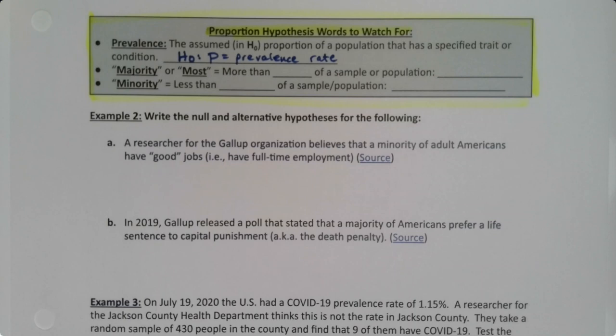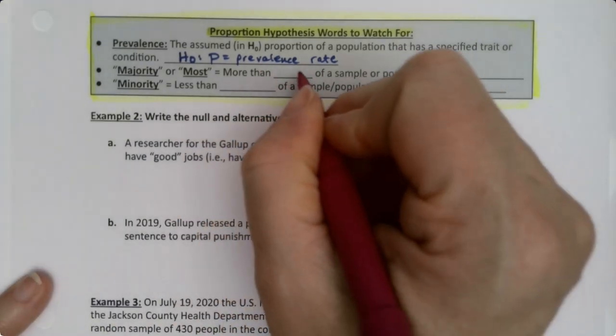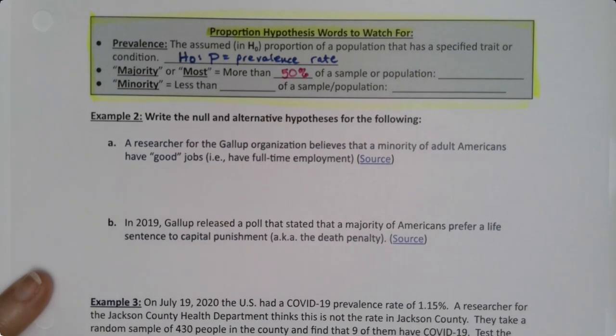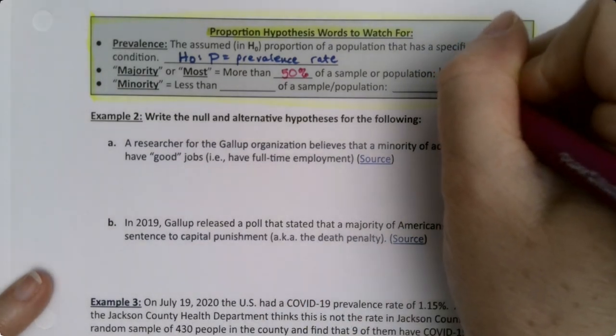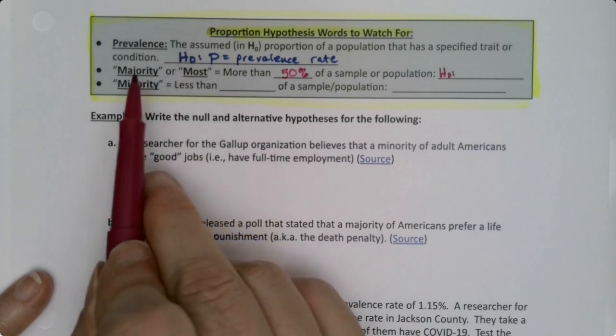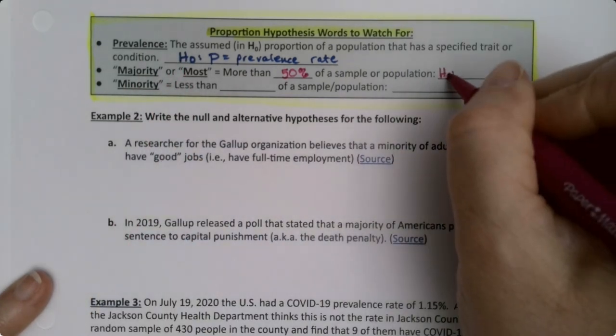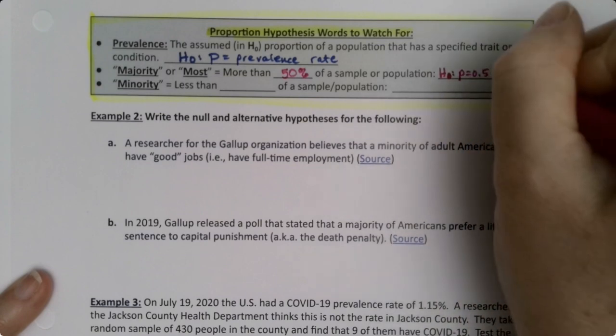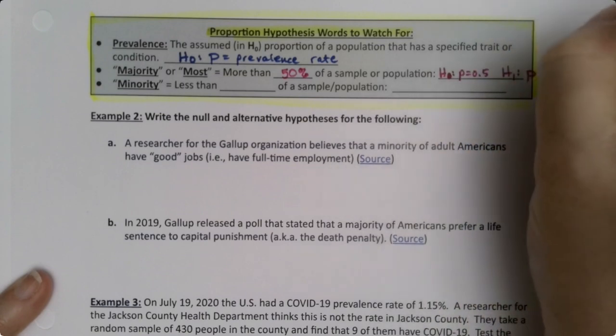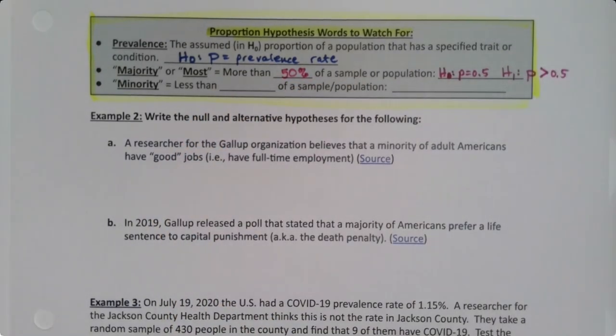Prevalence comes up, but it's not as common as the other two which we run into a lot. One is majority or most. If we say most people think this, or a majority of patients think this, majority means more than 50%, which means your alternative and your null are going to be set once you see majority or most. Your null hypothesis has to be P equals 0.5 and your alternative hypothesis has to be P is greater than 0.5, period.